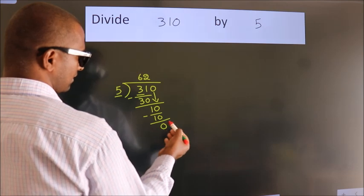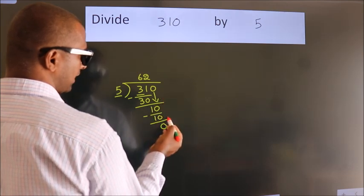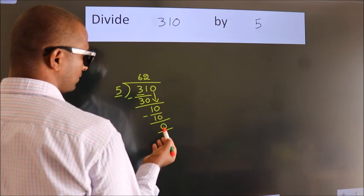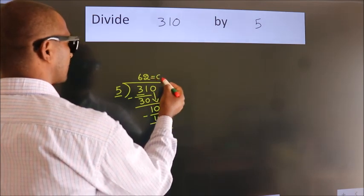After this, no more numbers to bring down. And we got remainder 0. So this is our quotient.